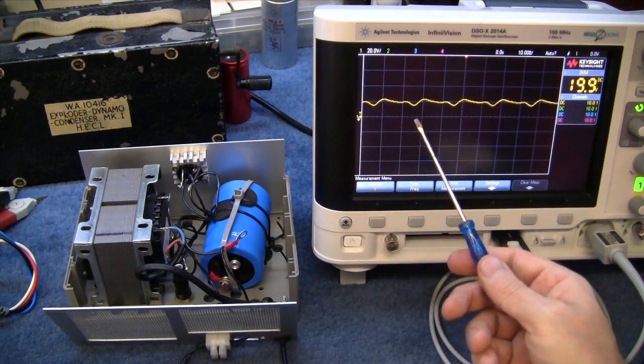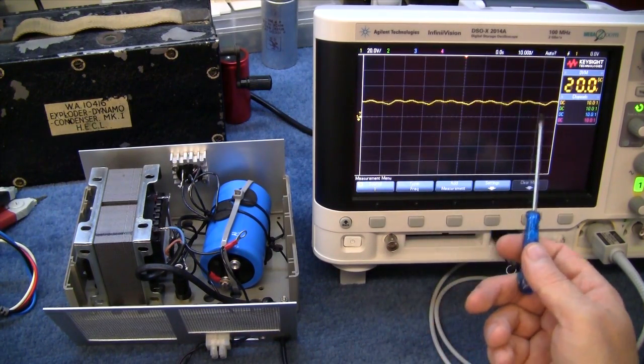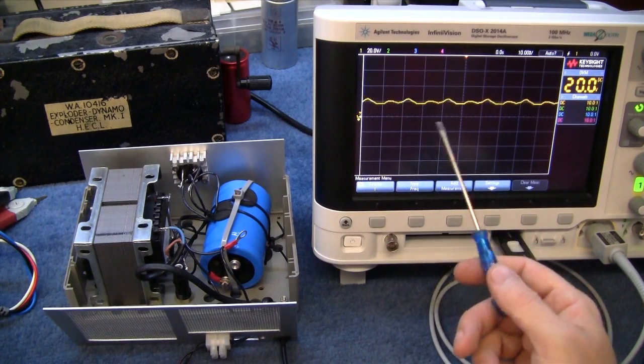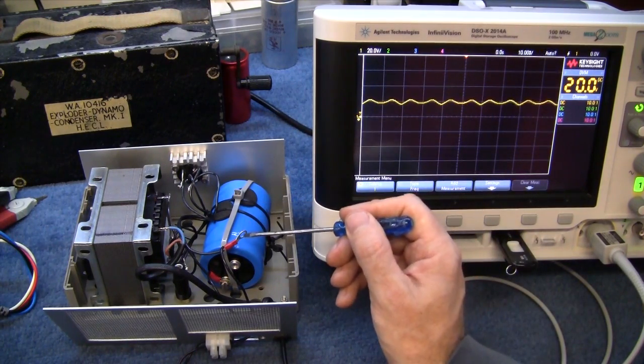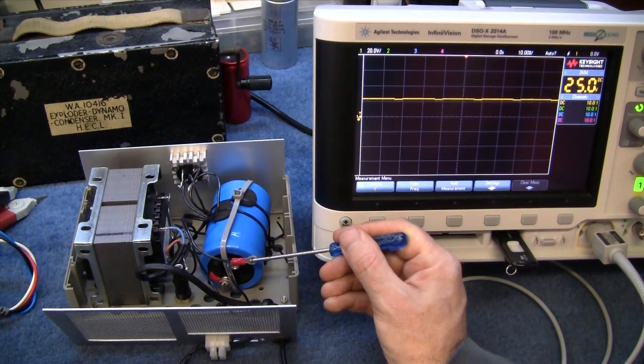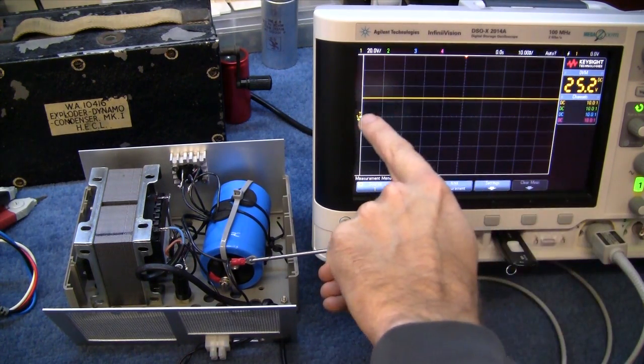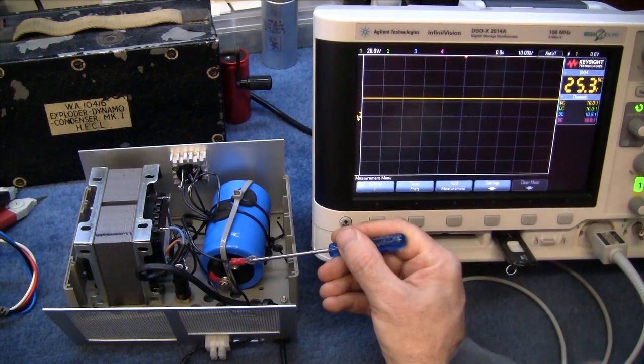What you see here on the oscilloscope is quite a messy output voltage. Now if I reconnect this capacitor using this screwdriver, see how it's now a pure line, nice and straight and even.